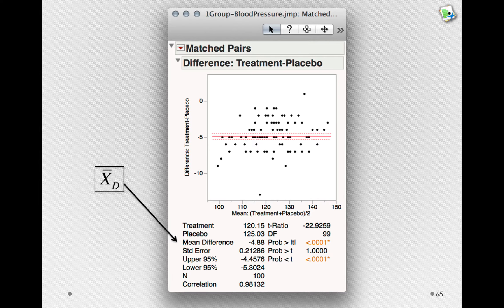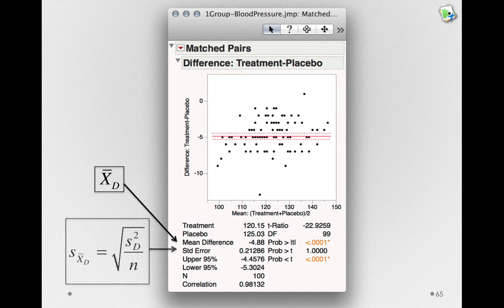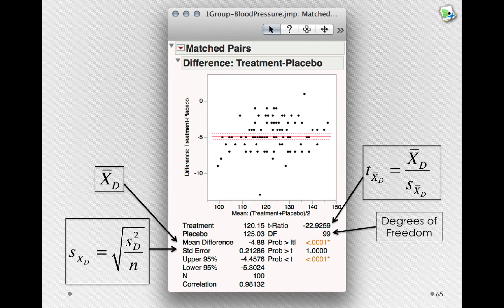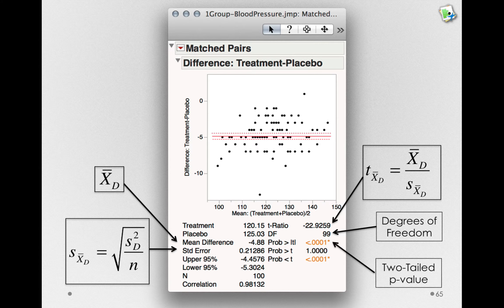Again, we have the observed mean difference. Notice the value is identical. JUMP is in fact doing the identical analysis. This is just a platform set up to take those columns by default. We also have our estimated standard error, our t-ratio, our degrees of freedom, and our two-tailed p-value, all of which are identical.